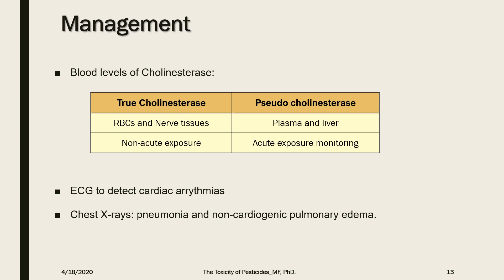You can test the diagnosis by checking the patient's response to initial treatment with atropine, as will be discussed shortly. Following that, ECG is very important to monitor cardiac arrhythmias, and chest X-ray is useful for diagnosis of pneumonia and non-cardiogenic pulmonary edema.